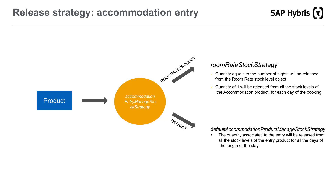The quantity equal to the number of nights will be released from the room rate stock level object. The quantity of 1 will be released from all stock levels of the accommodation product for each day of the booking. The Default entry is linked to the DefaultAccommodationProductManagedStockStrategy, which releases stock only from the product linked to the current entry — a service product for example. The quantity associated to the entry will be released from all stock levels of the entry product for all days of the length of stay.